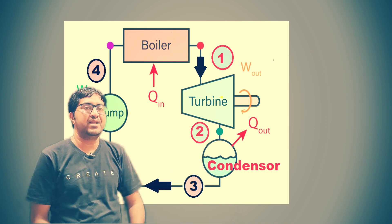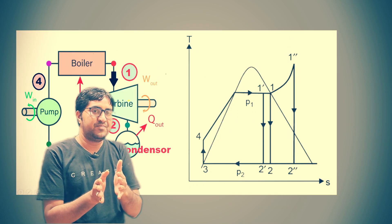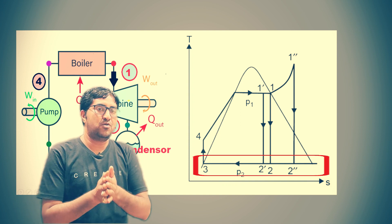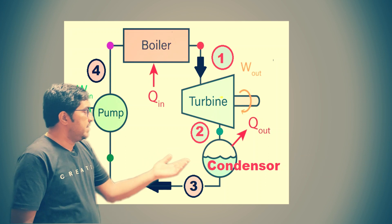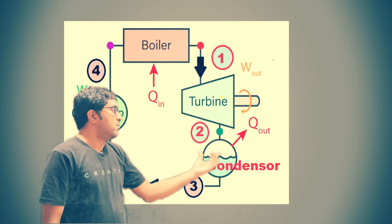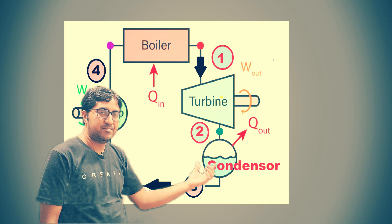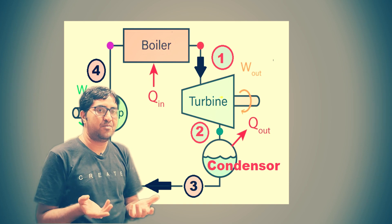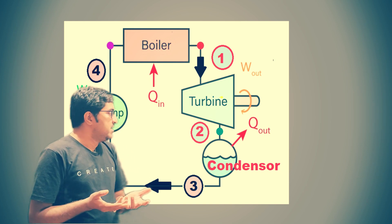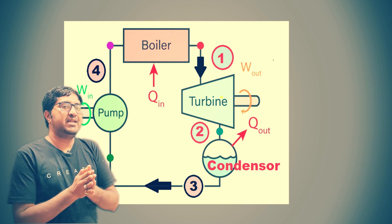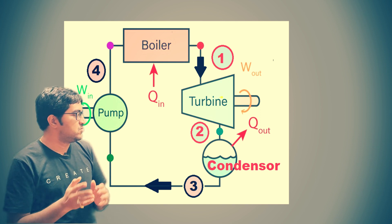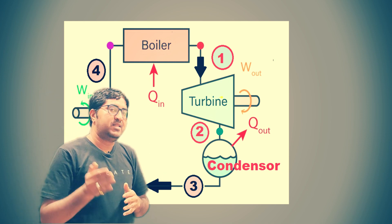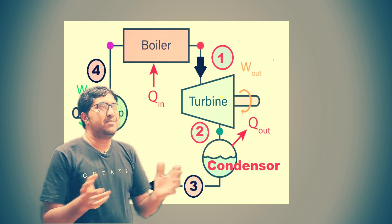In the condenser, latent heat is transferred — latent heat means there is a change of phase but the temperature remains constant, also called hidden heat. Additionally, air acts as a resistance to heat flow because its thermal conductivity is very low, making it a poor conductor of heat. So the basic need is to maintain vacuum in the condenser so that there is proper exchange of heat between the hot and cold fluid.